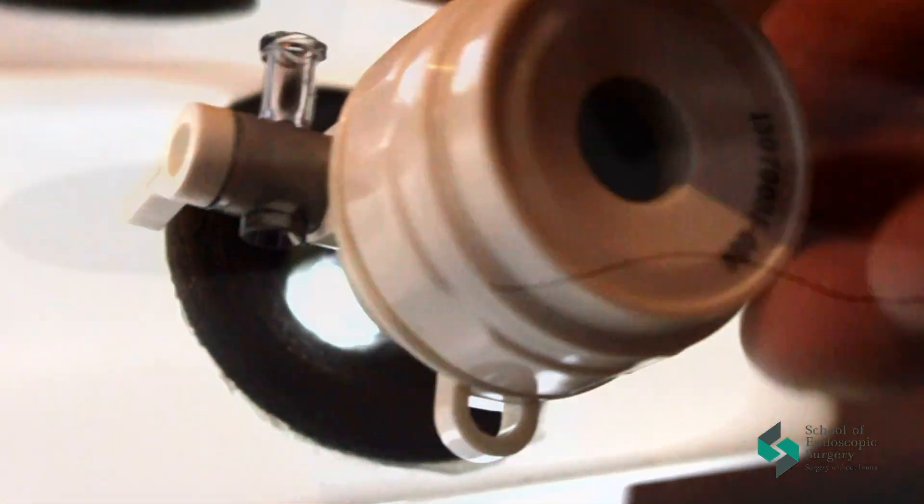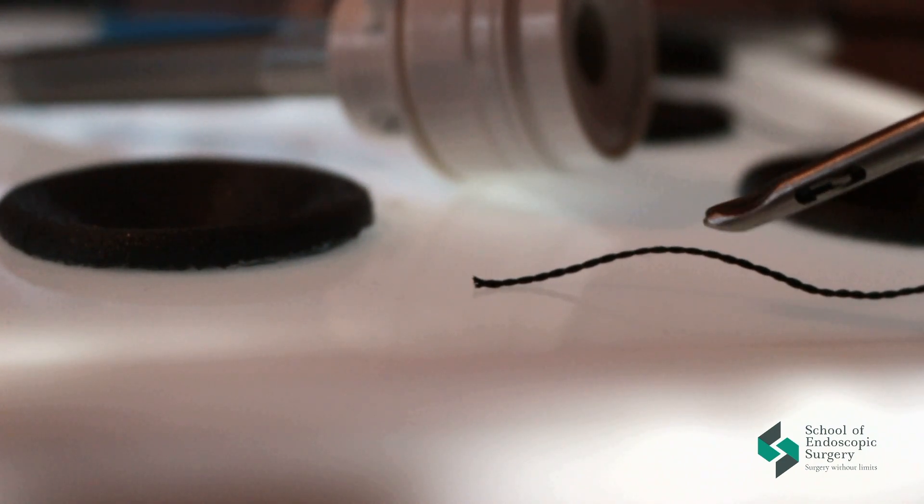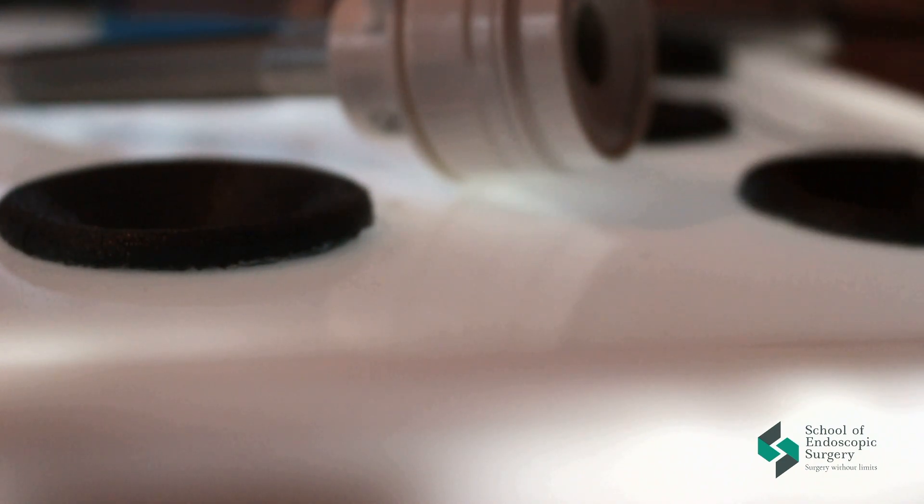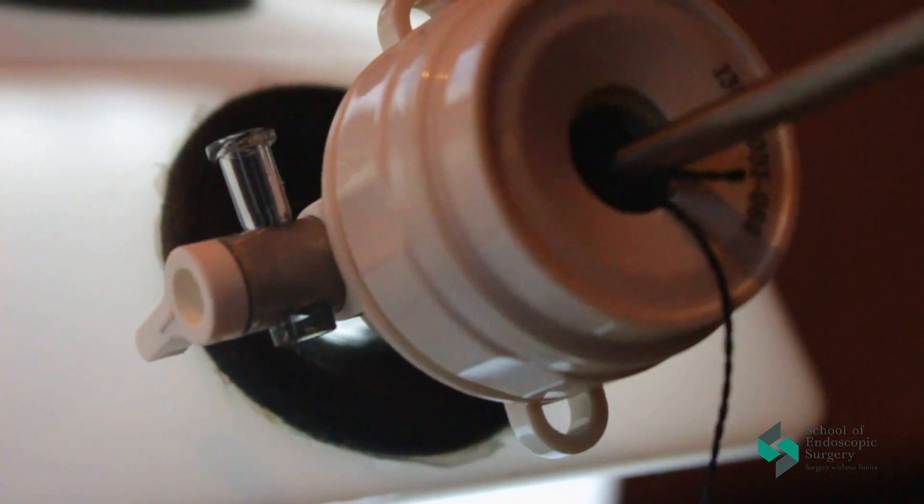After we have inserted the thread into the trocar, our long end of the thread should remain outside. The short end of the thread inserting through the ring or stitching the tissues.